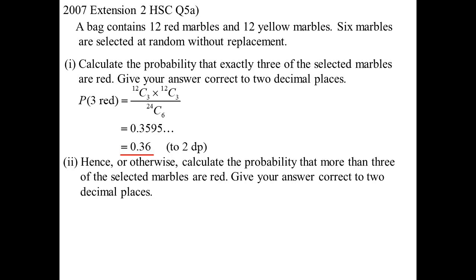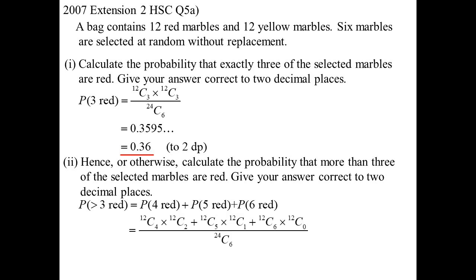The second part, hence or otherwise, calculate the probability that more than three of the marbles are red. Well, more than three, what are all the possibilities? I could have had four red, five red, or six red. So I've got to work out each of those probabilities. Bottom of the fraction is still 24 C 6. Top of the fraction would go four red. So from the 12 red, I'm going to choose four. But that therefore means I'm going to choose two yellow ones from the 12.